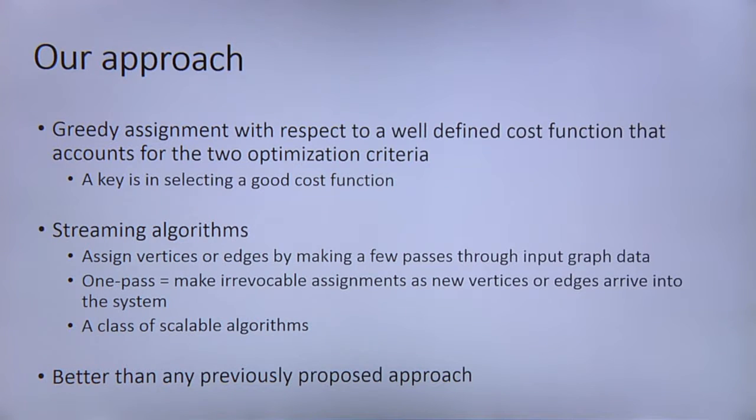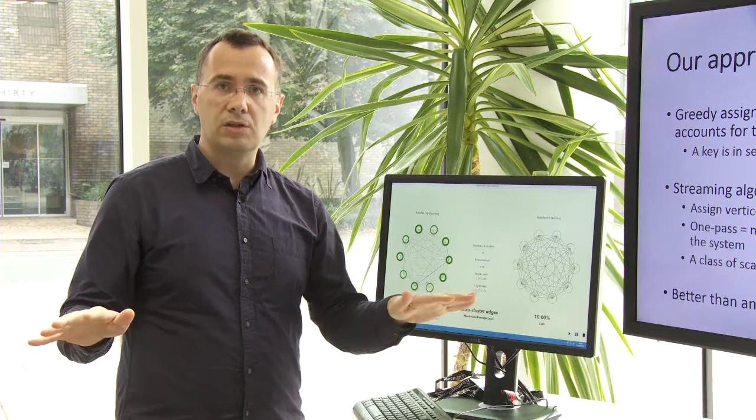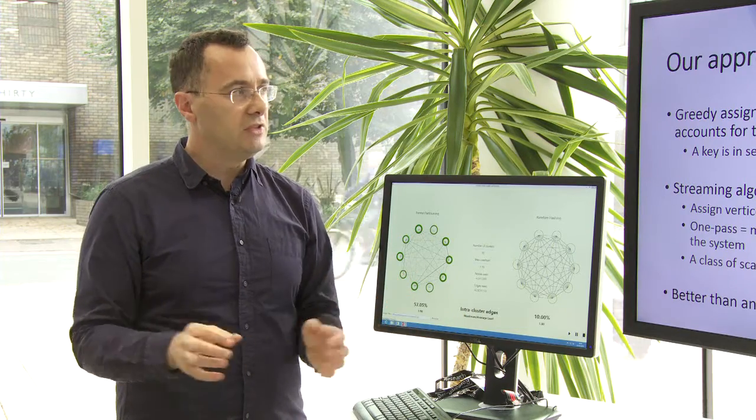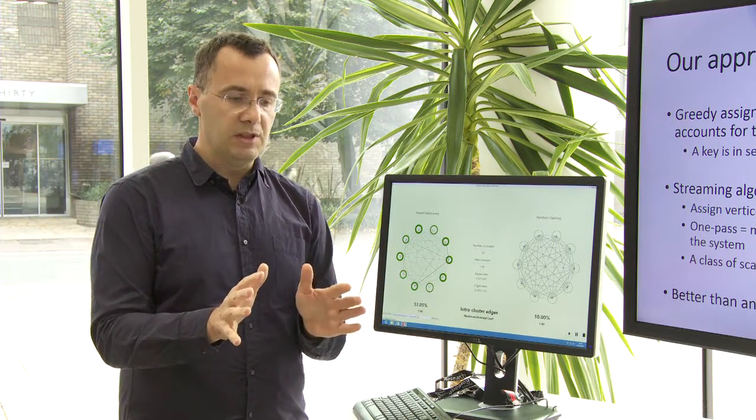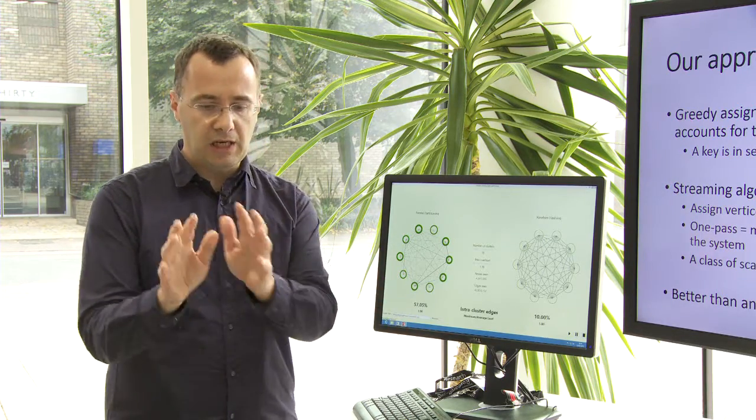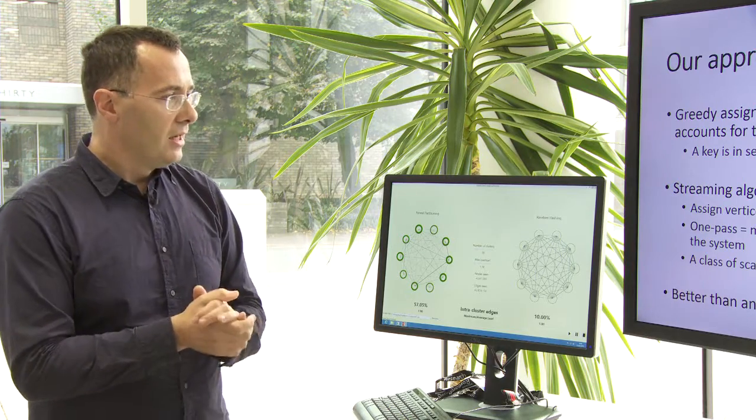It's really about partitioning so that we optimize this. A way to do, a principled way that we pursue, is defining a cost of a partition and then minimizing that given cost. But the cost function has to be designed well so that it captures really these both components - two components of workload balancing, number of nodes across partitions, and the sparsity of cuts.